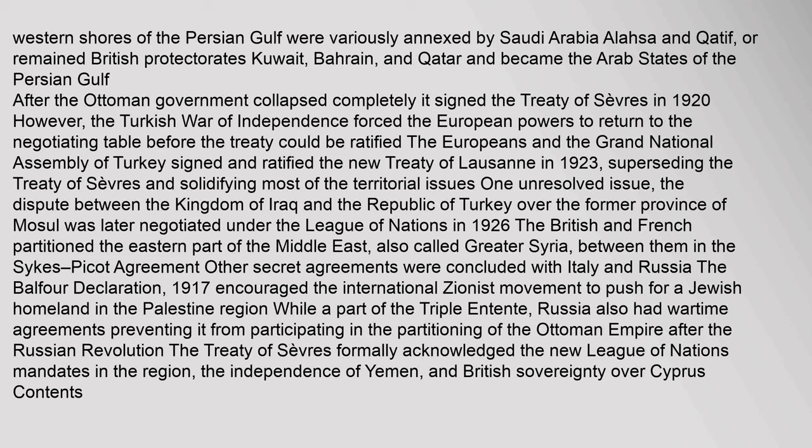It signed the Treaty of Sevres in 1920. However, the Turkish War of Independence forced the European powers to return to the negotiating table before the treaty could be ratified. The Europeans and the Grand National Assembly of Turkey signed and ratified the new Treaty of Lausanne in 1923, superseding the Treaty of Sevres and solidifying most of the territorial issues. In 1926, the British and French partitioned the eastern part of the Middle East, also called Greater Syria, between them in the Sykes-Picot Agreement.